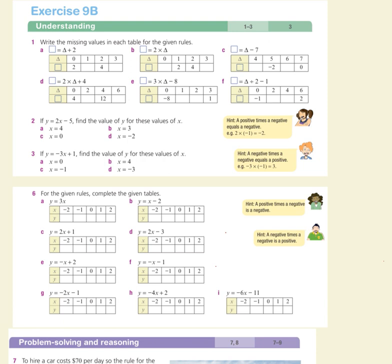Welcome everybody. We're going to be looking at some tables and some rules. For 1a, we've got a table of values that says when triangle is something, square is something else. At the top it says square equals triangle plus 2, so no matter what triangle is, square will be 2 more than that: 1 plus 2 is 3, 2 plus 2 is 4, 3 plus 2 is 5.